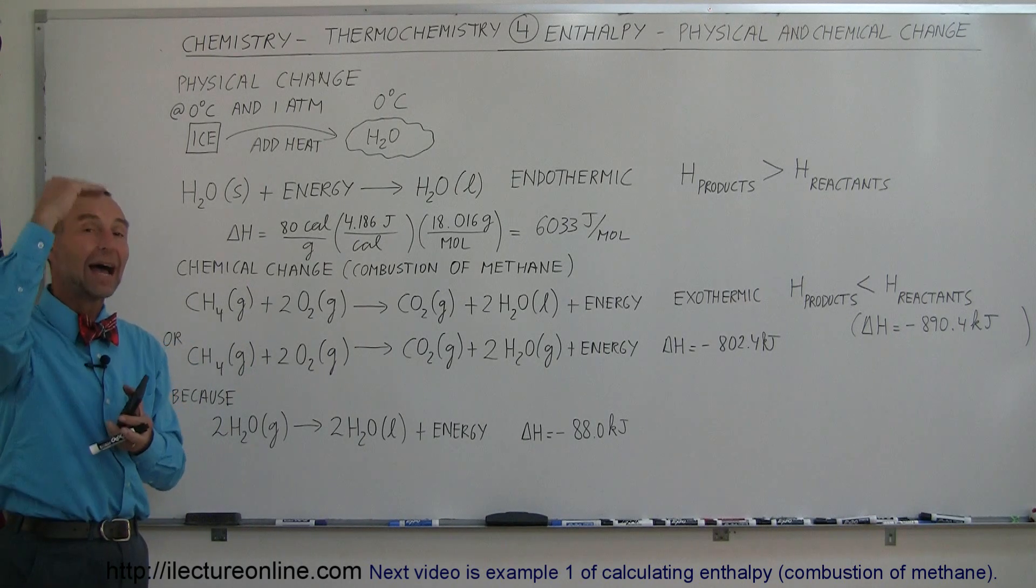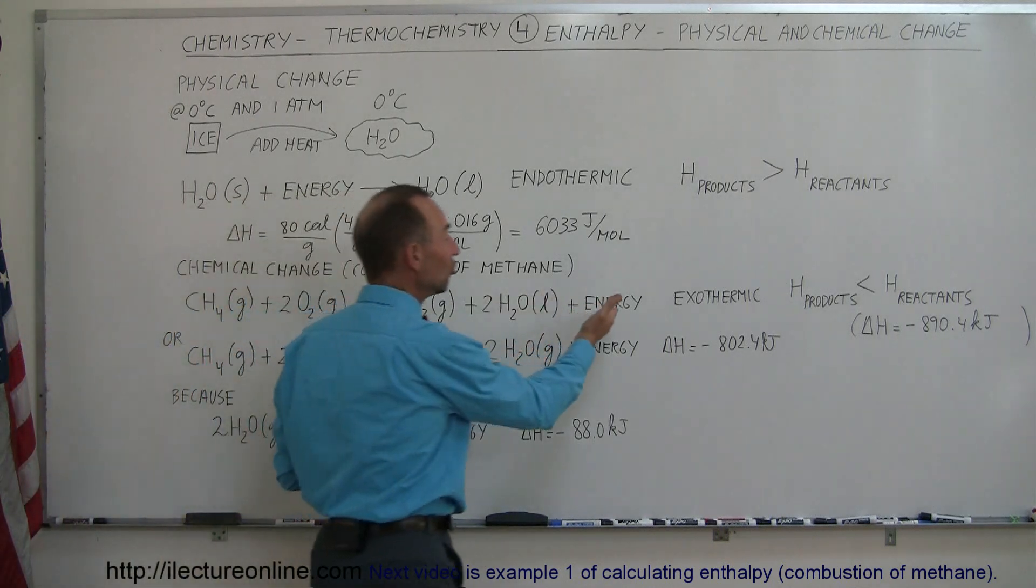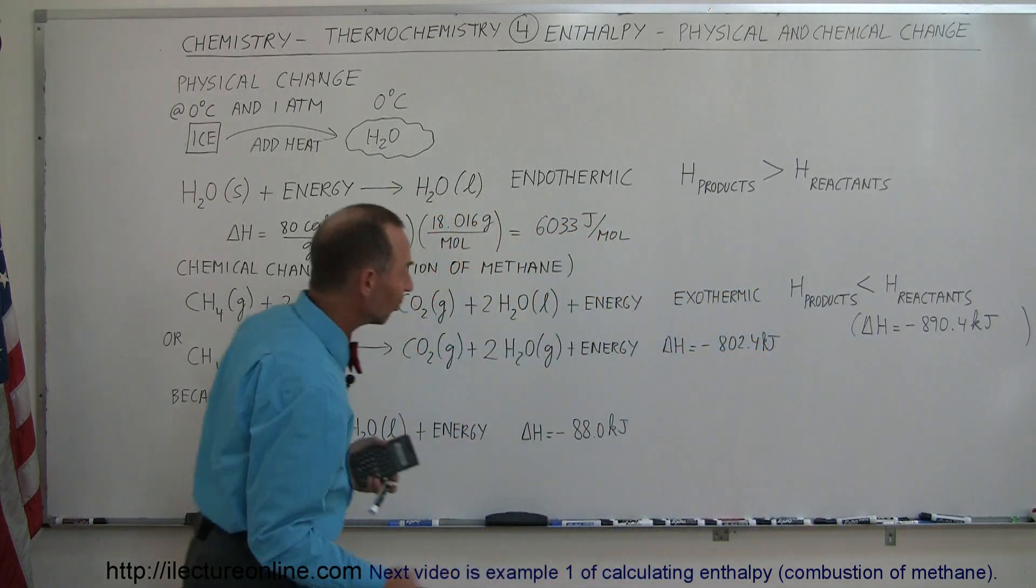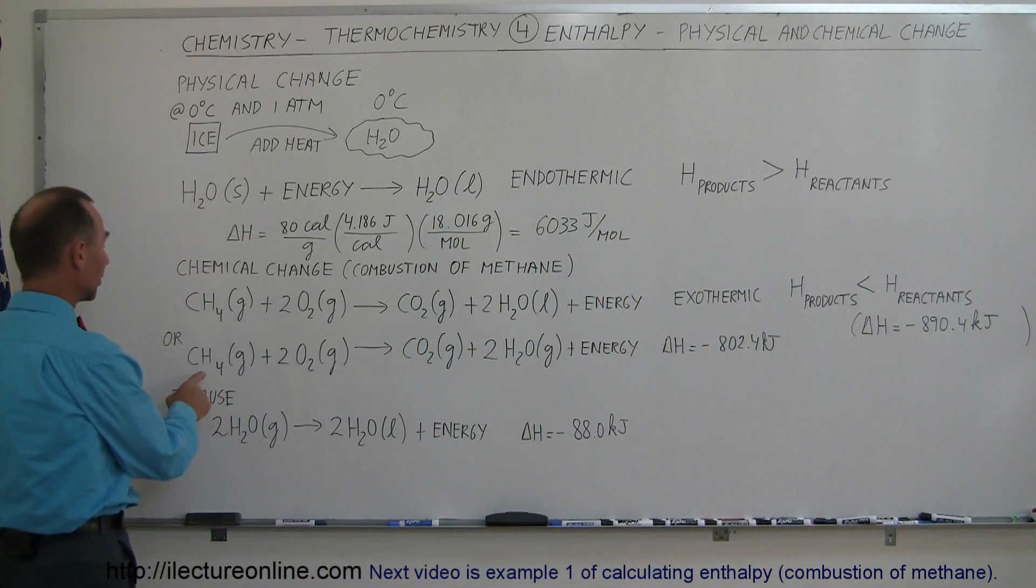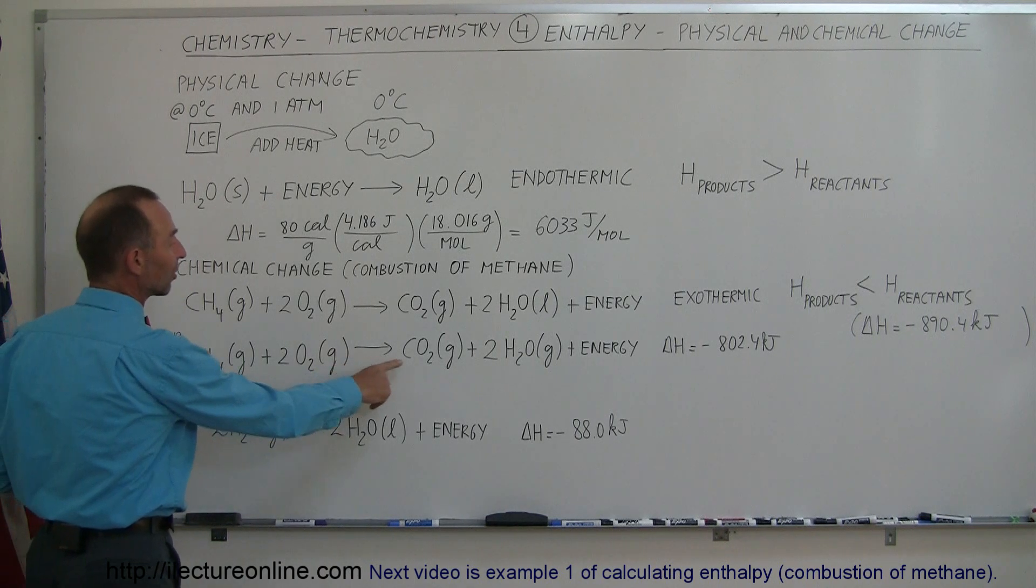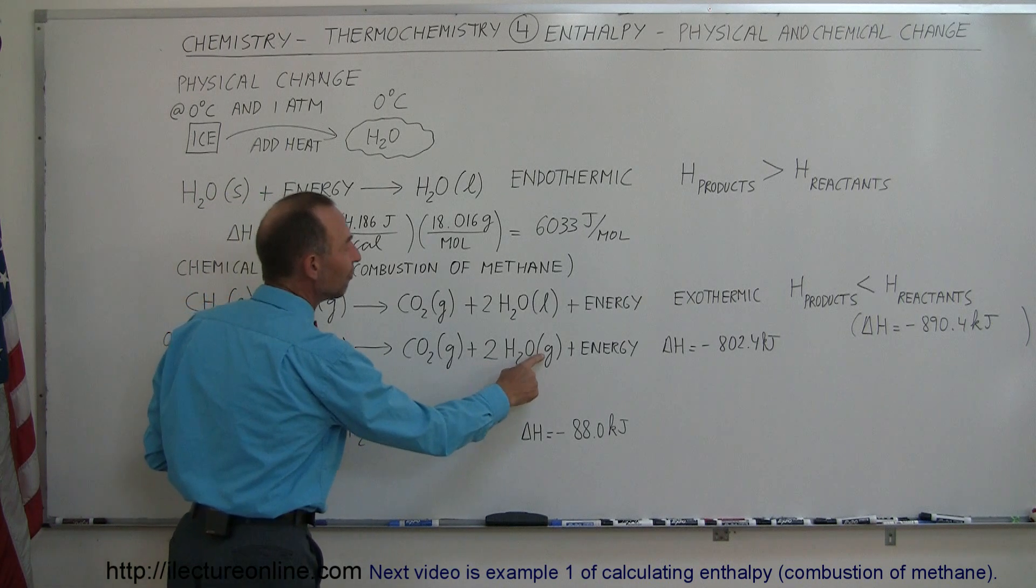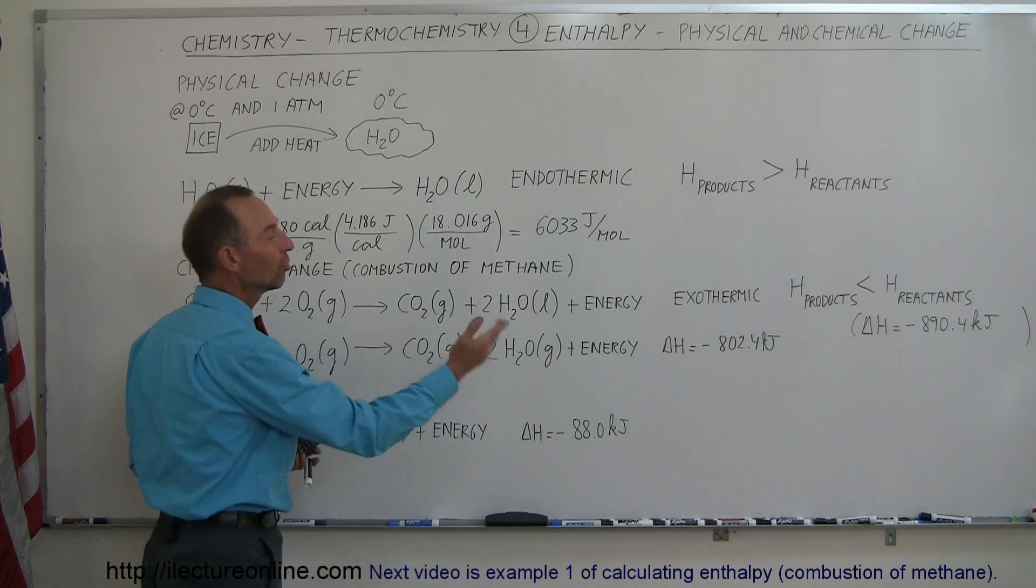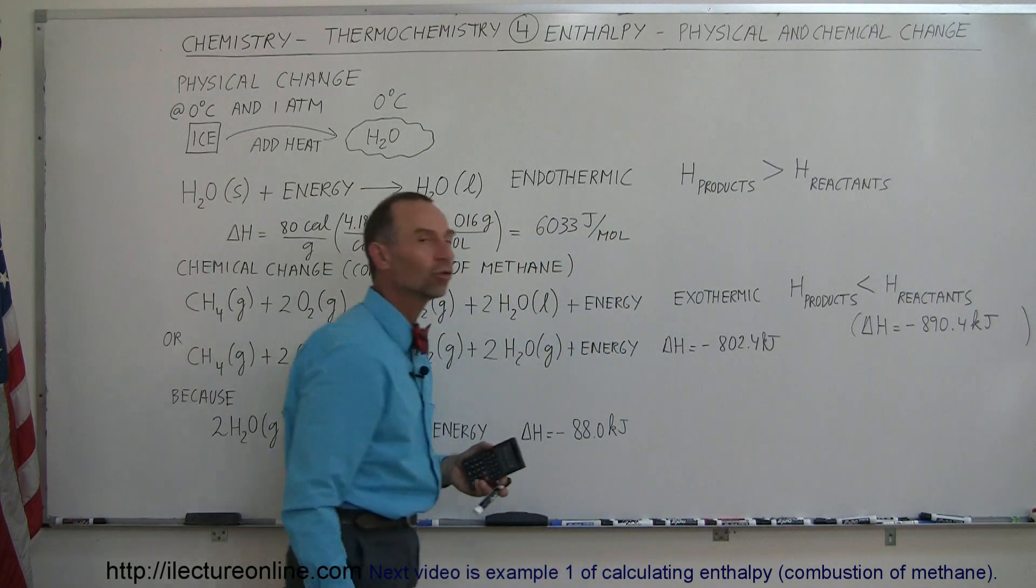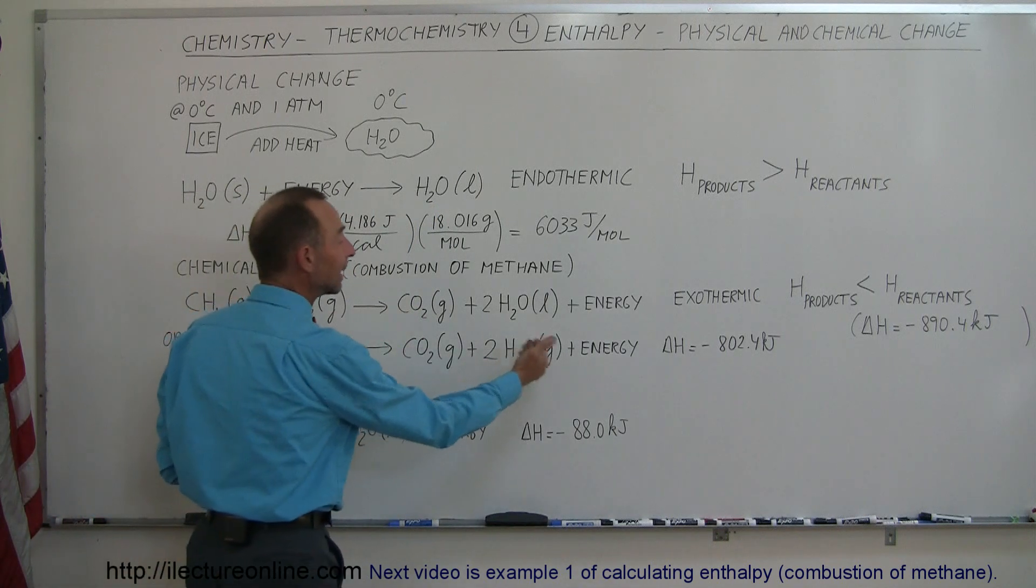Now since a vapor state of water is a higher energy level than the liquid state of water, the energy produced is typically less than that. So we start with methane gas, one mole, two moles of oxygen gas, reacts, it gives us one mole of carbon dioxide gas, and two moles of water vapor, gaseous format, and energy released. In this case, only 802.4 kilojoules is released in that particular reaction because it ends up with water in the gas state.